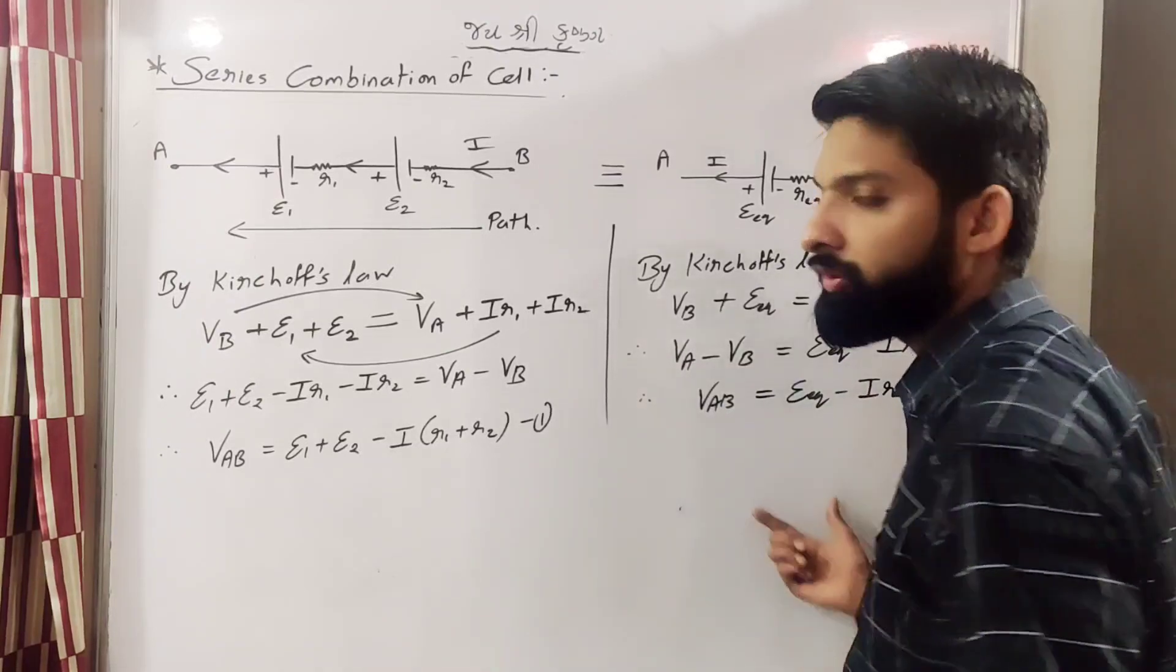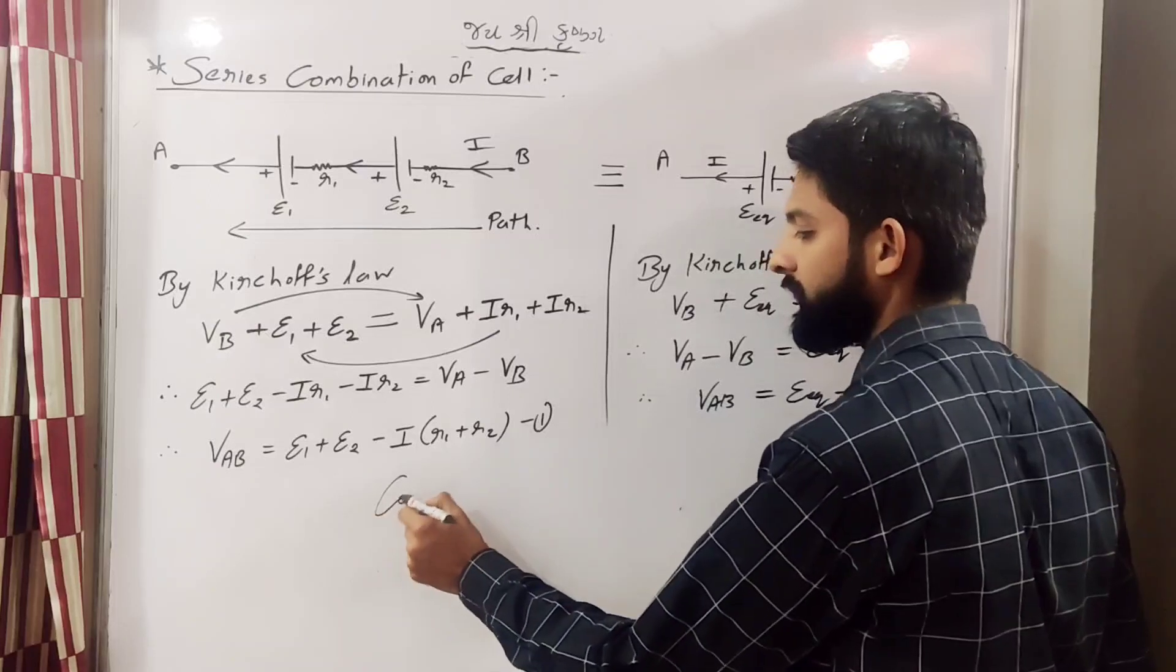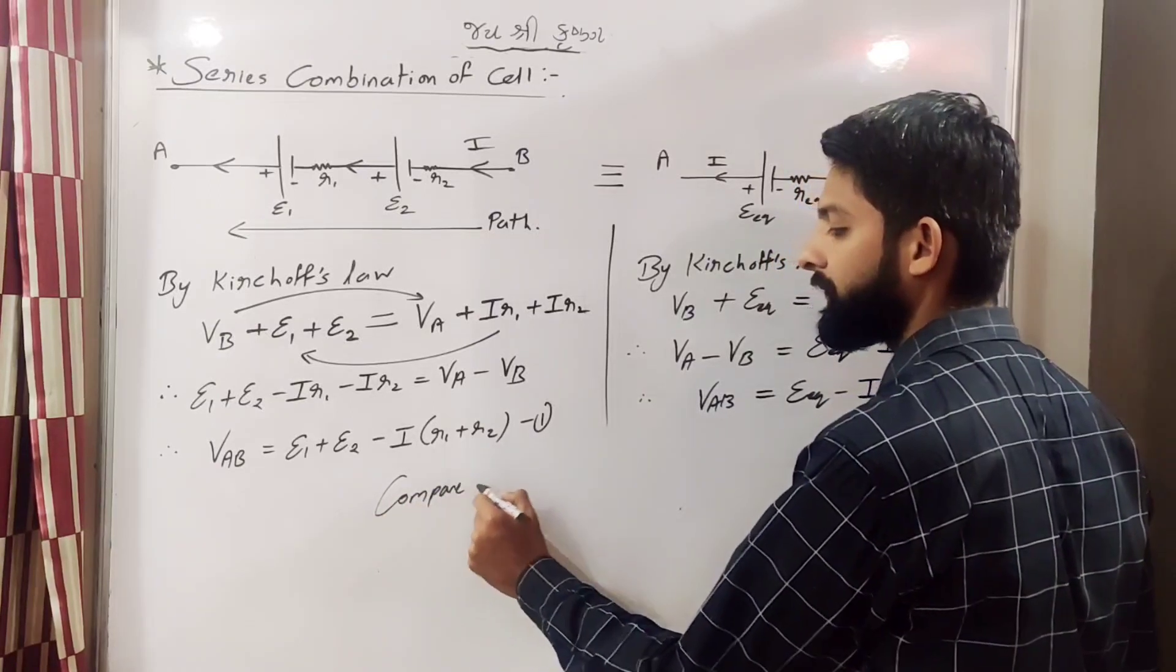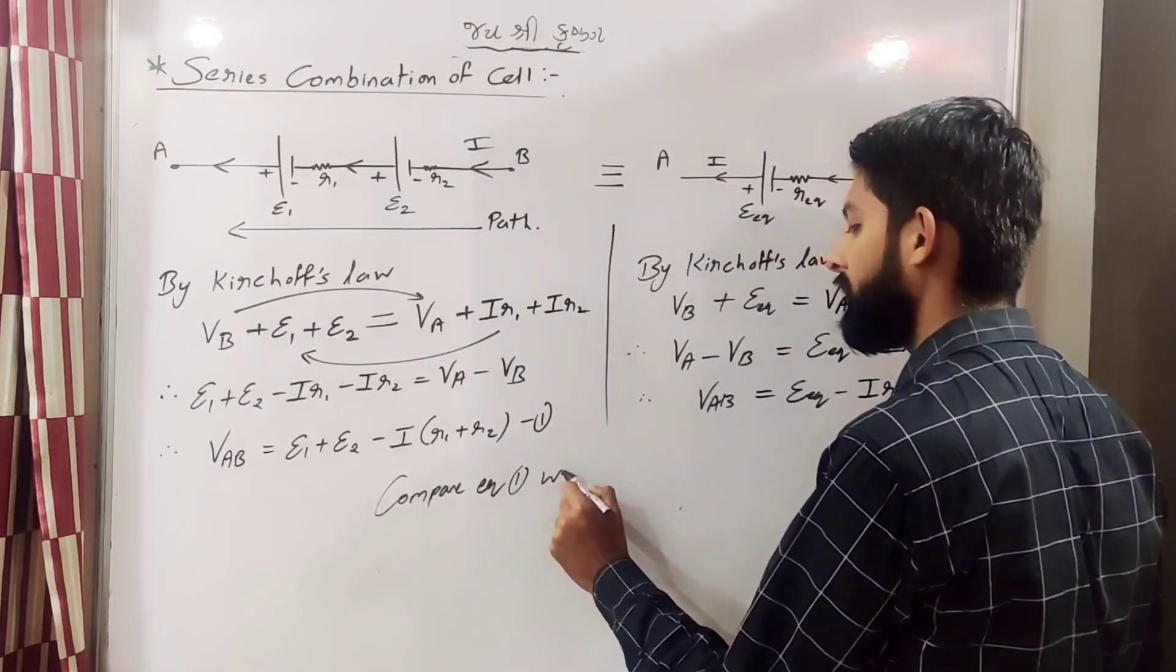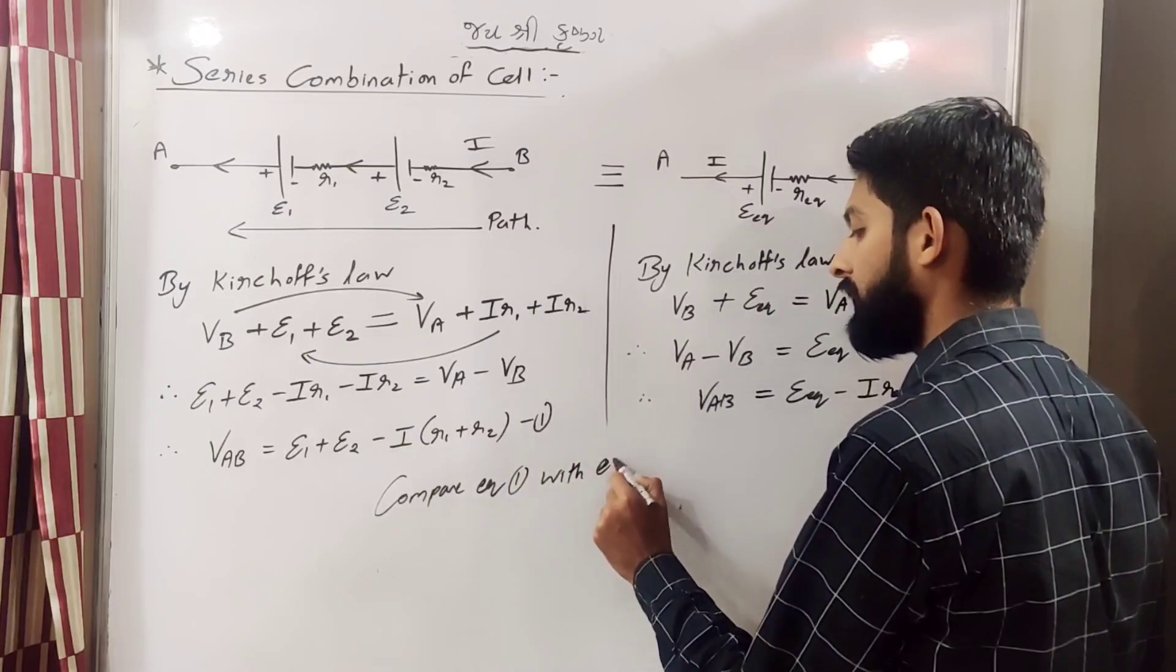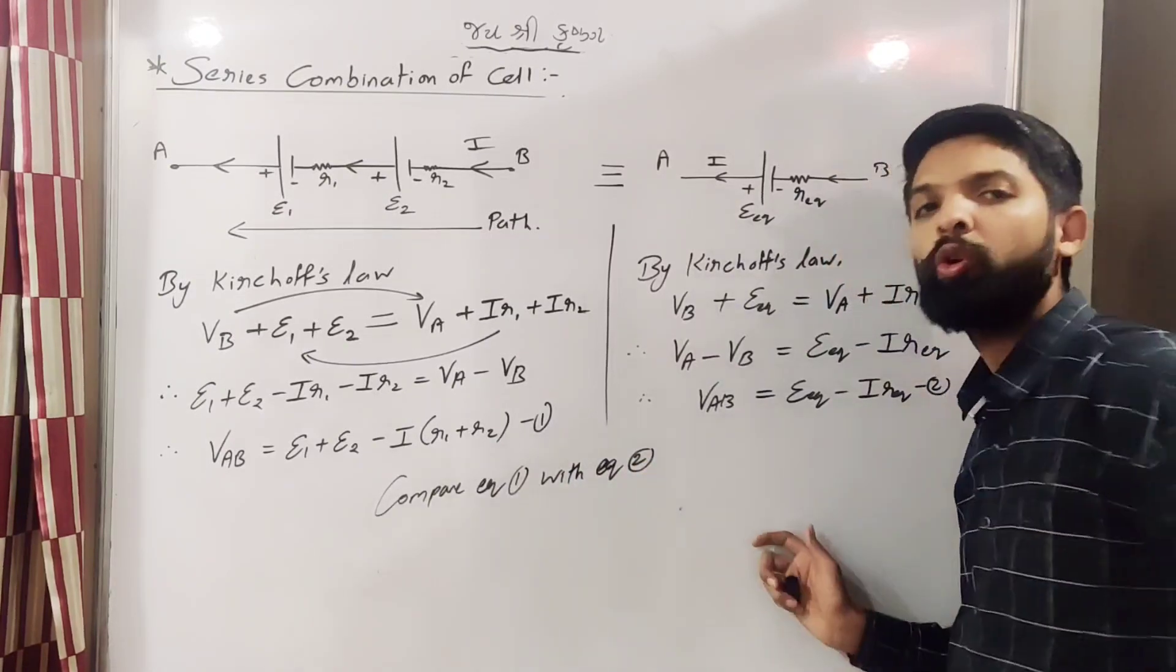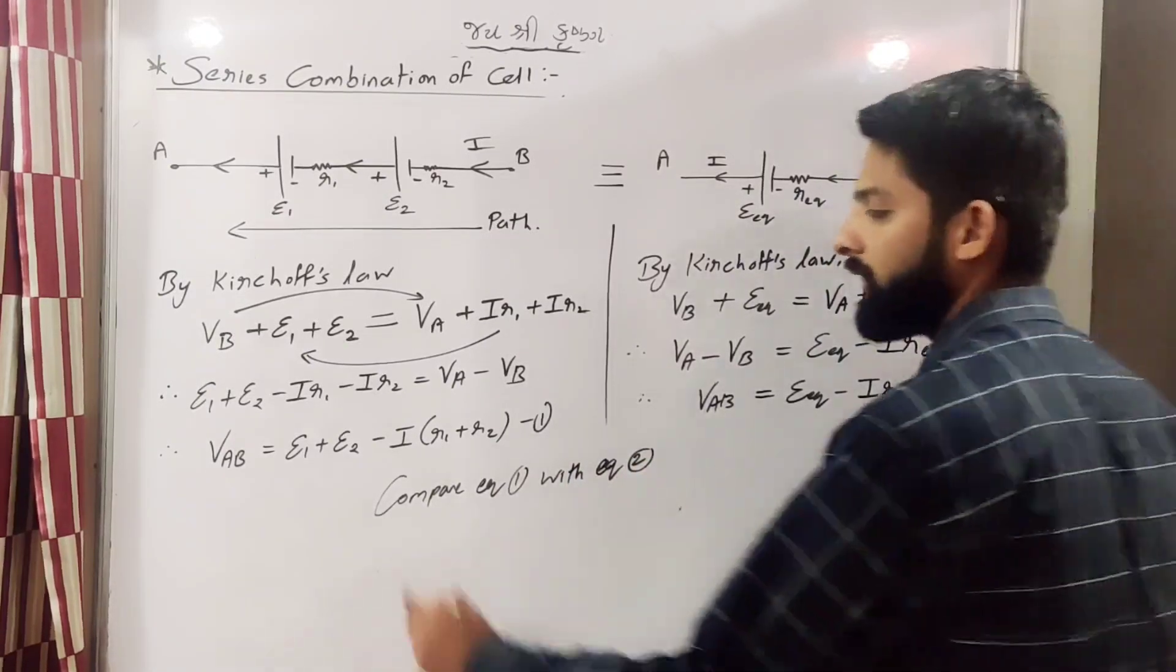That is epsilon equivalent minus IR equivalent. So you can compare both this equation. Compare equation 1 with equation 2. So now go compare karo.